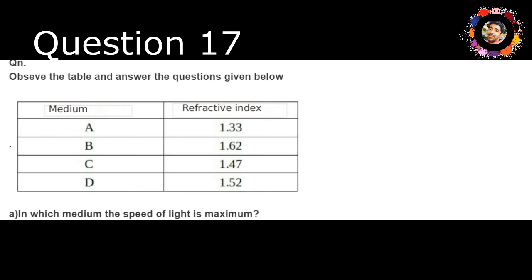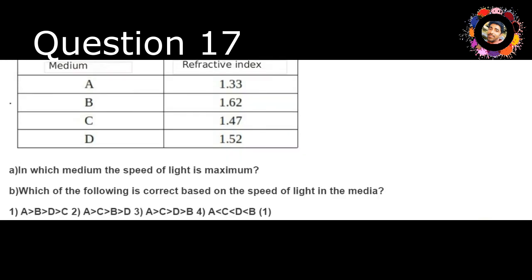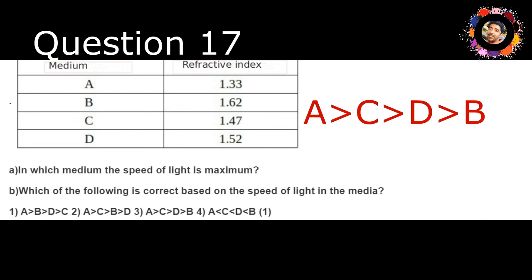The speed of light is maximum. The refractive index relates to the density matrix. The speed of light is according to the medium. The answer is c and d and b — A is equal to c and d is equal to b. This is the refractive index.